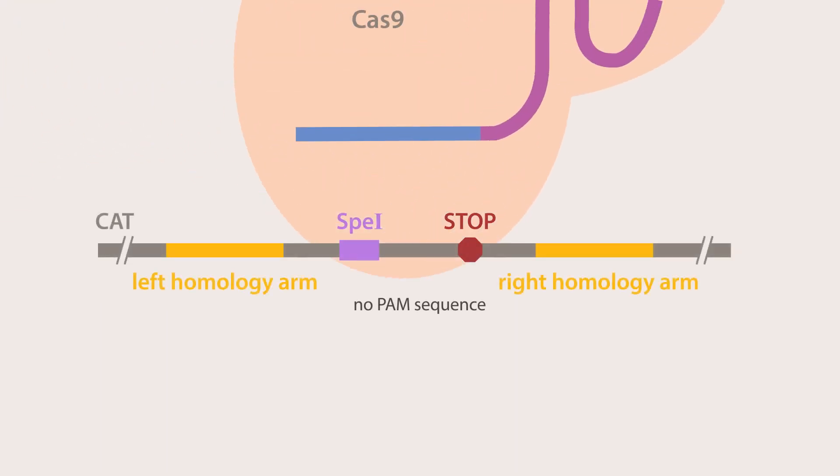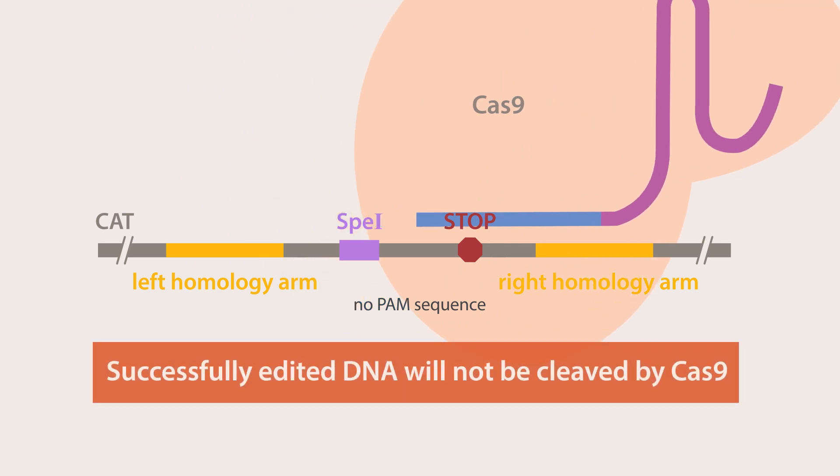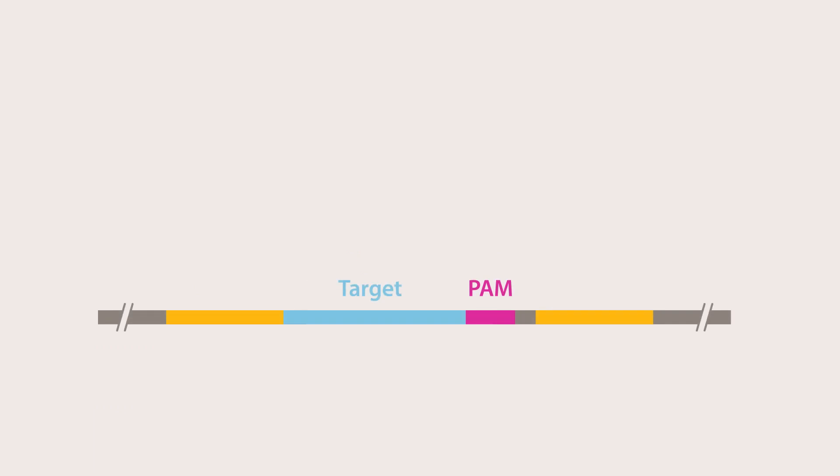Without an intact PAM sequence, successfully edited DNA will not be targeted and cleaved by Cas9. However, unedited cells will be targeted by Cas9 and will die when their DNA is cleaved.